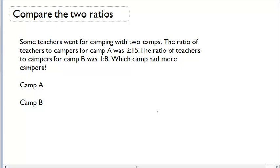I start off and I know that some teachers went camping with two camps. The ratio of teachers to campers for camp A was 2 to 15, so camp A is 2 to 15. The ratio of teachers to campers for camp B was 1 to 8, so camp B is 1 to 8. Which camp had more campers?